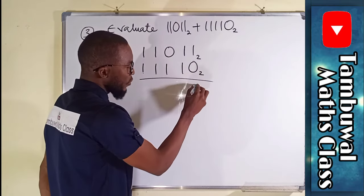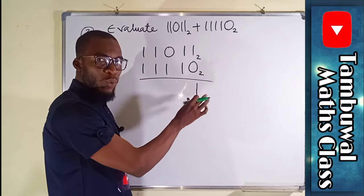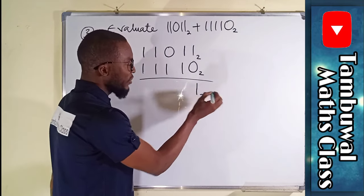One plus zero is one. It is less than two. Therefore, we are free to add one in base two.